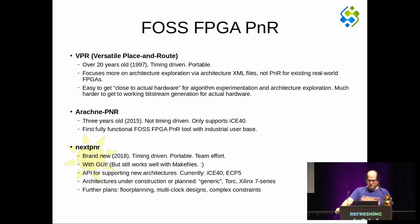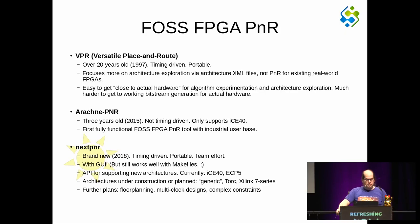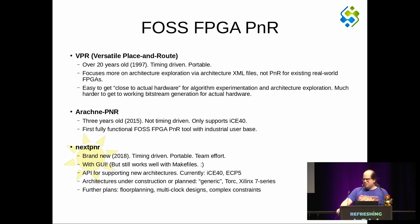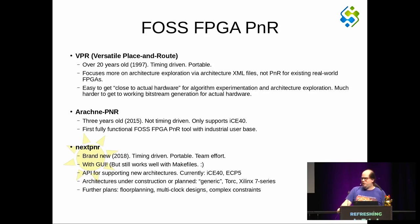To get started, I'll talk about the ecosystem of open source place and route tools we have right now. There is VPR, which is about 20 years old. It has timing driven algorithms and is fairly portable in terms of porting from one FPGA architecture to another. But VPR's focus is more on architecture exploration — trying out different variations of interconnect architecture. It's not really aimed at creating bitstreams for real-world FPGAs, which are not as regular as the made-up FPGAs VPR targets.